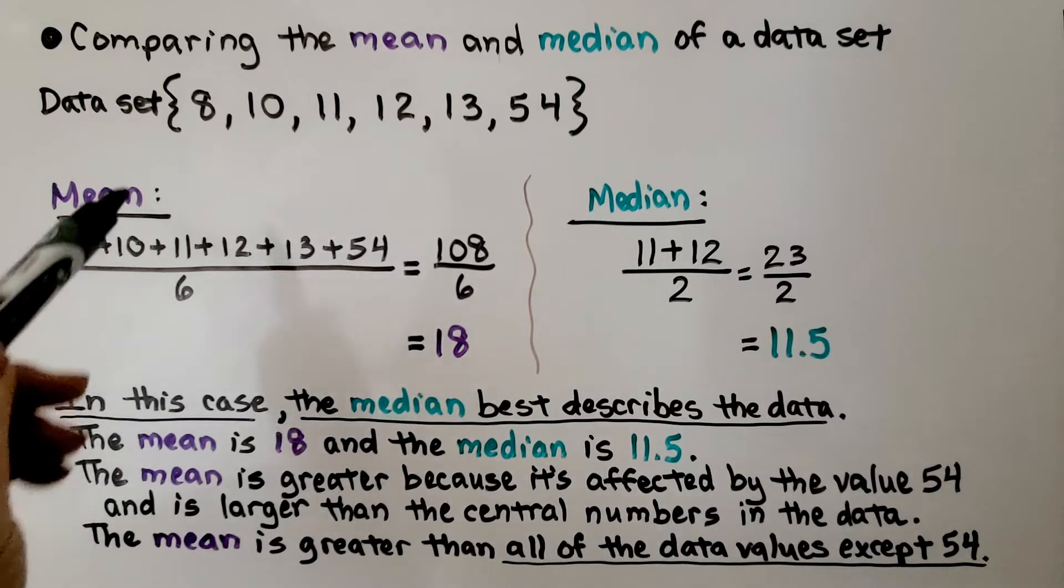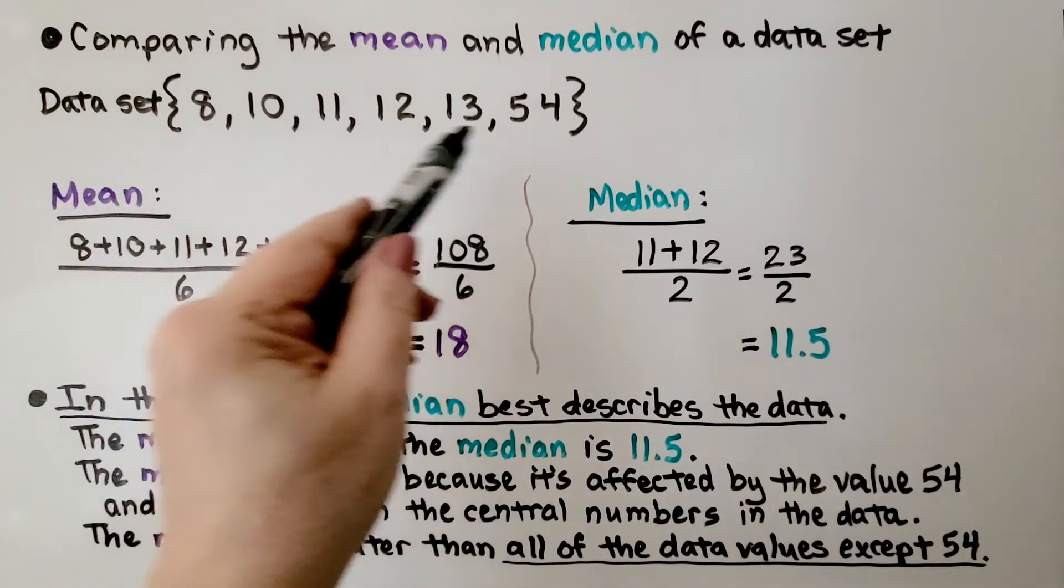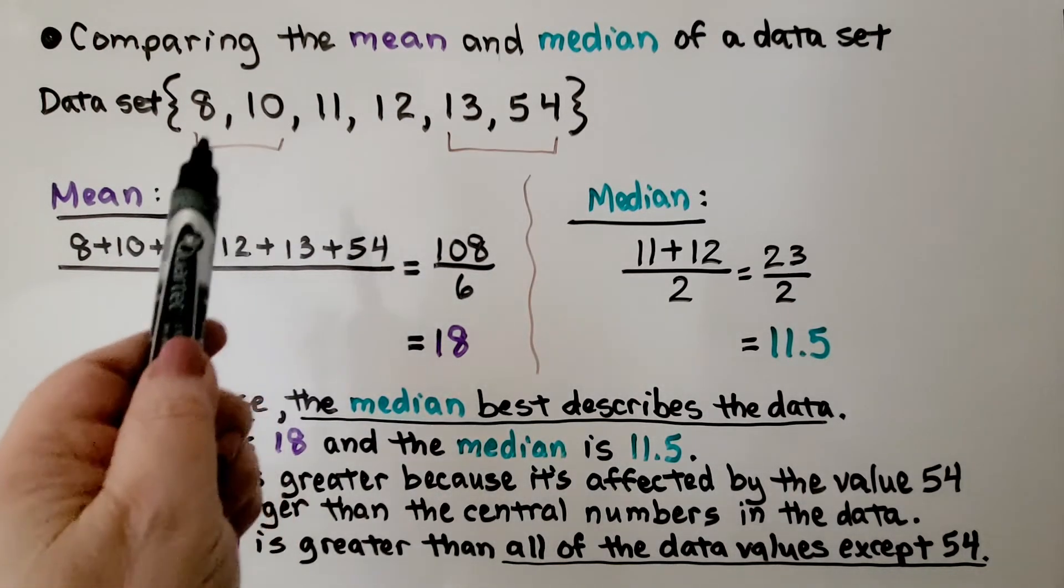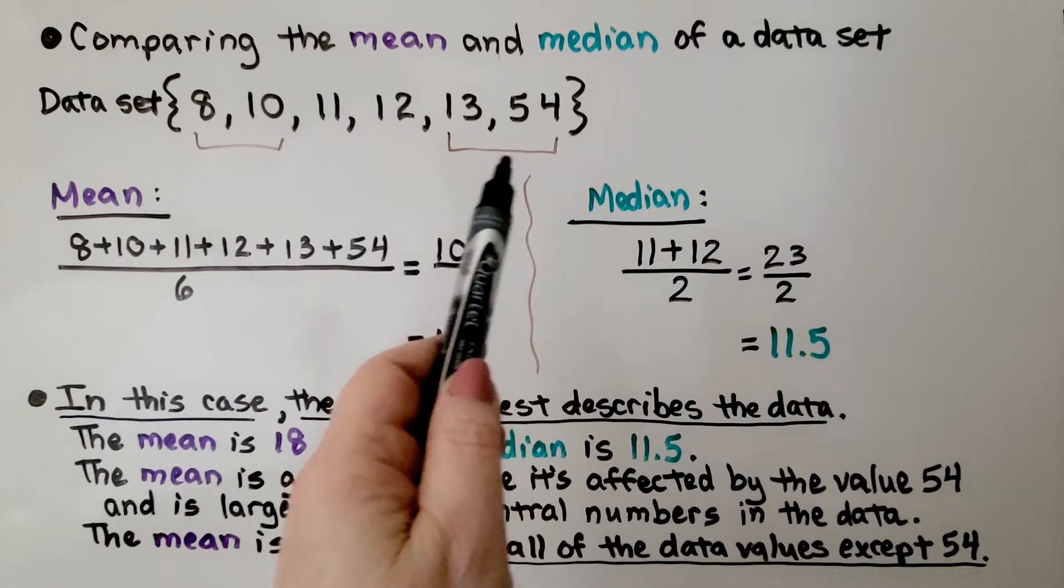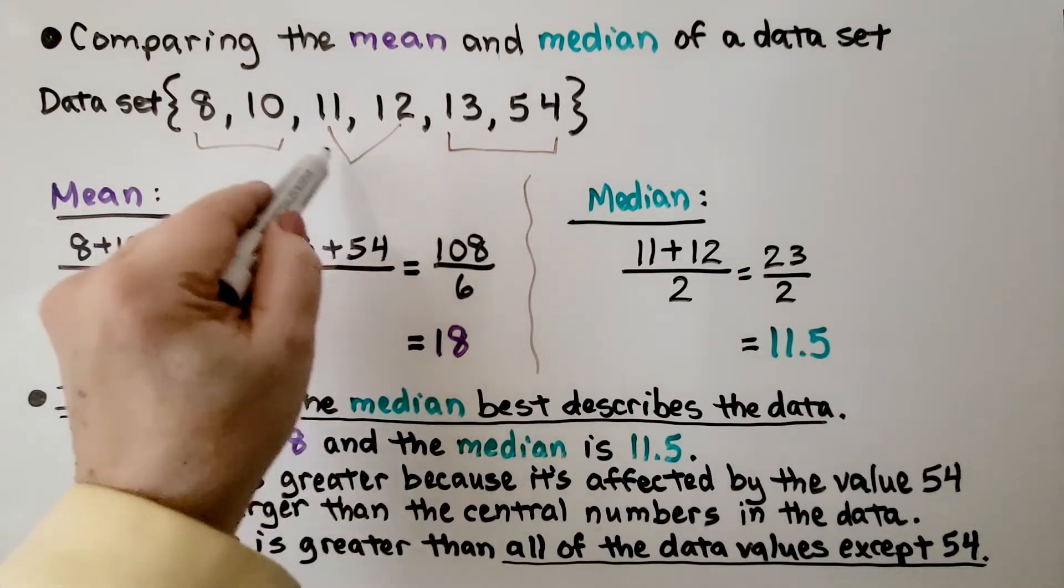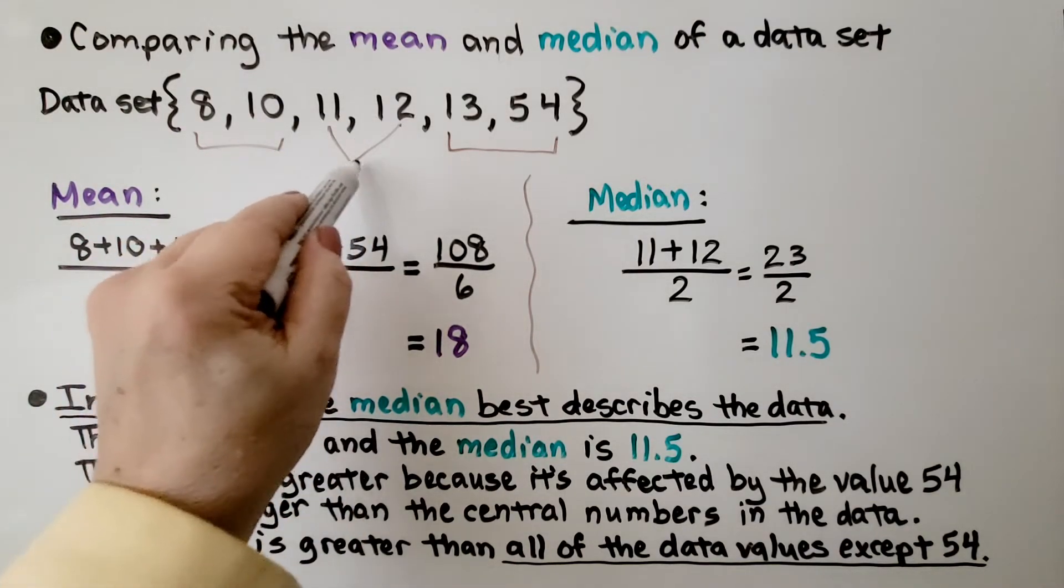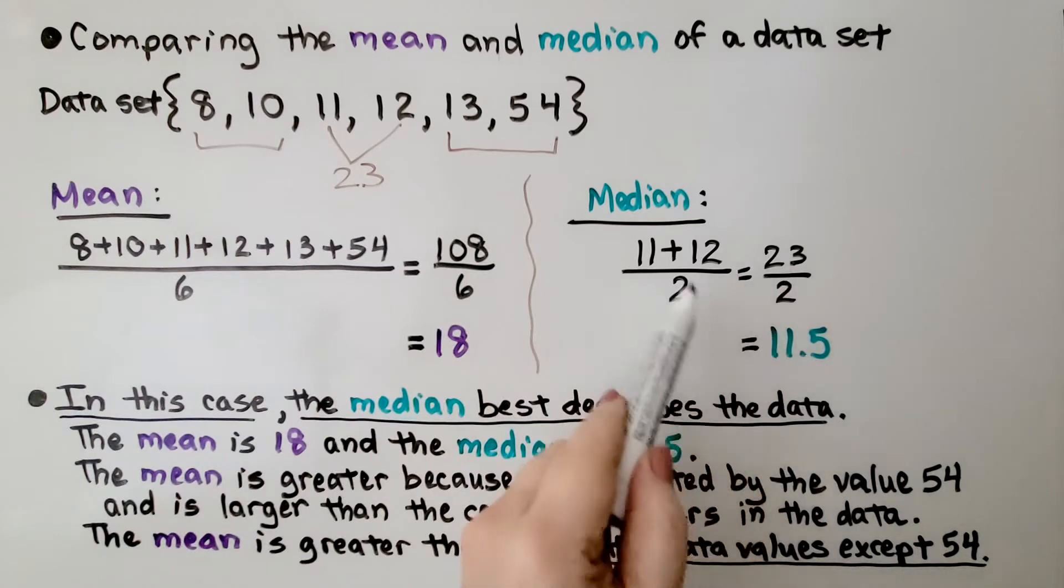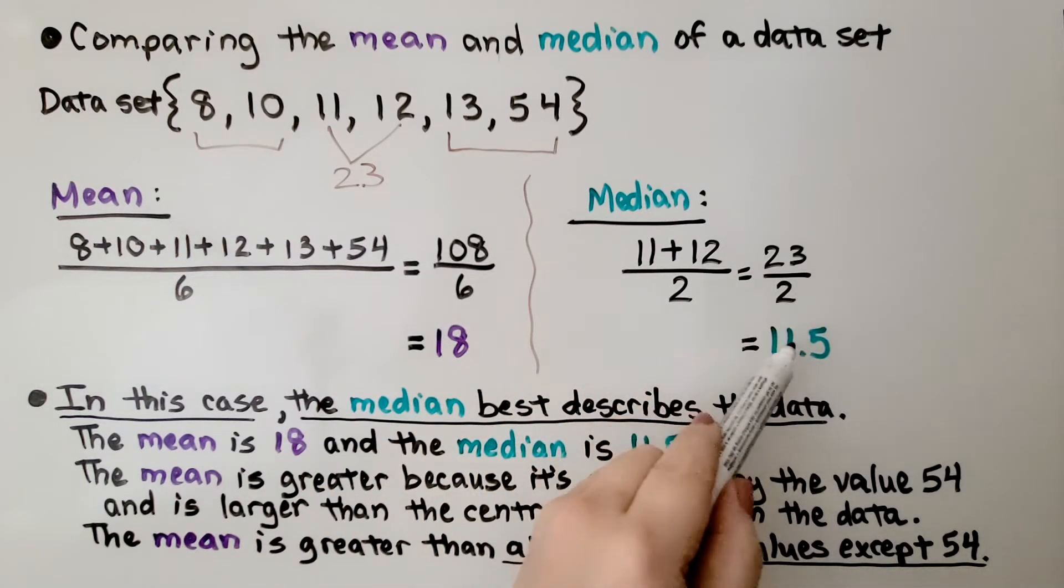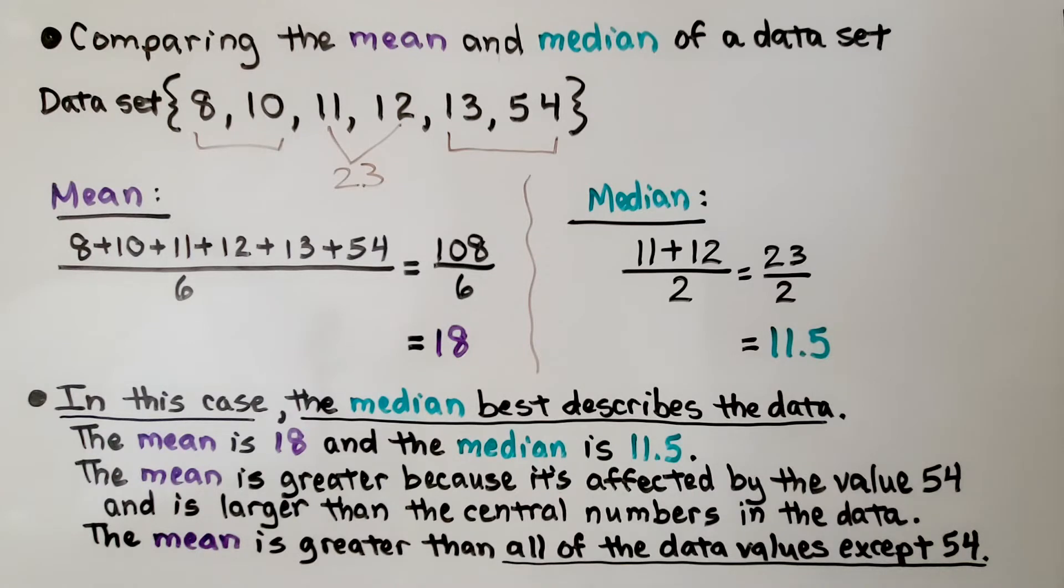For the median, we look at these 6 digits. We have 2 digits on this side of the center and 2 digits on this side of the center. We have an 11 and 12 in the middle. And because there's 2 numbers in the middle, we're going to add them together and we're going to get 23. And because we added 2 numbers together, we're going to divide the 23 by 2. We're going to get 11 and a half.